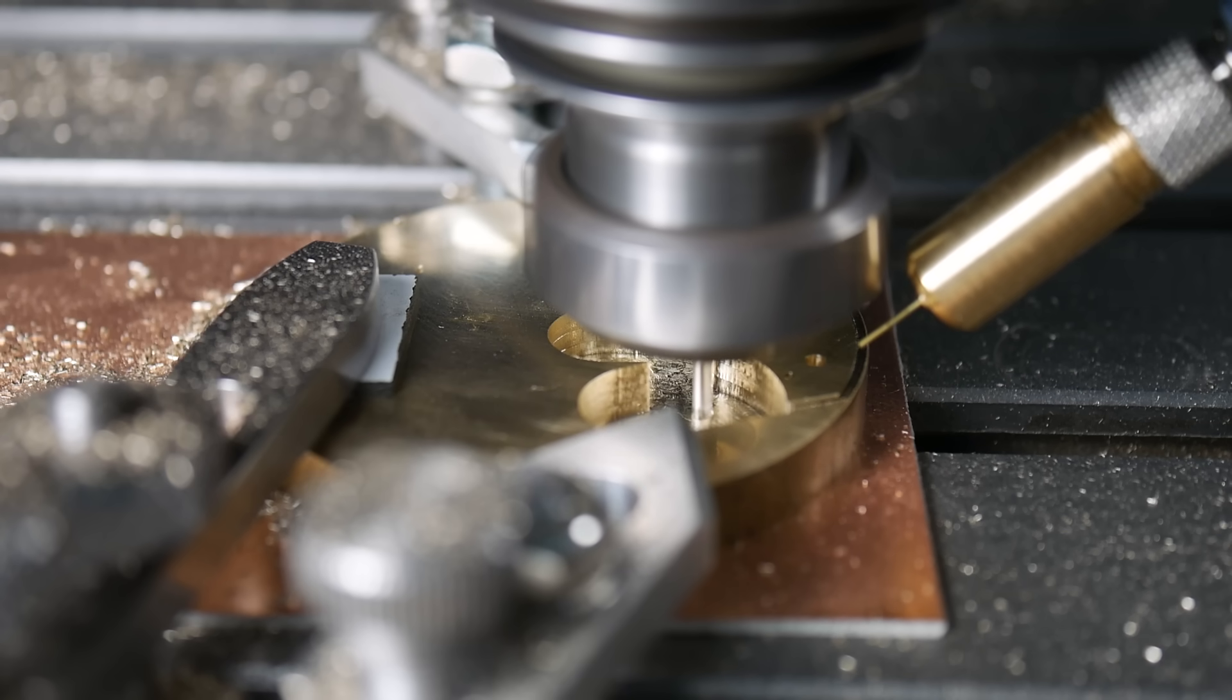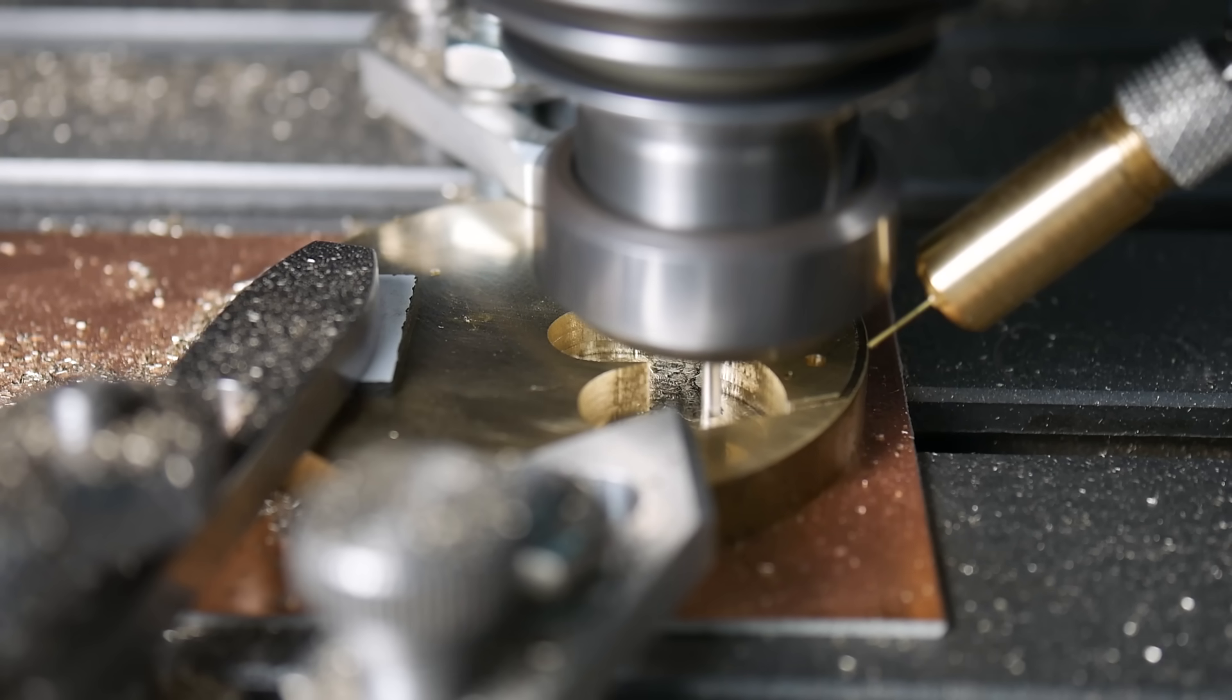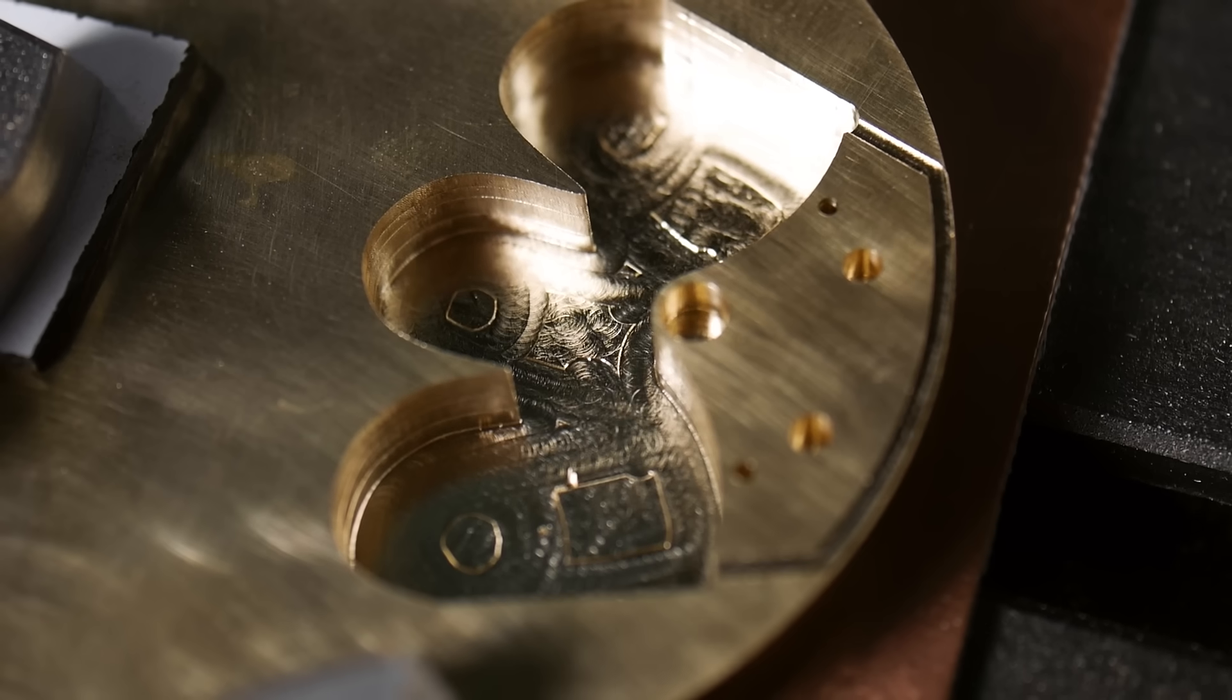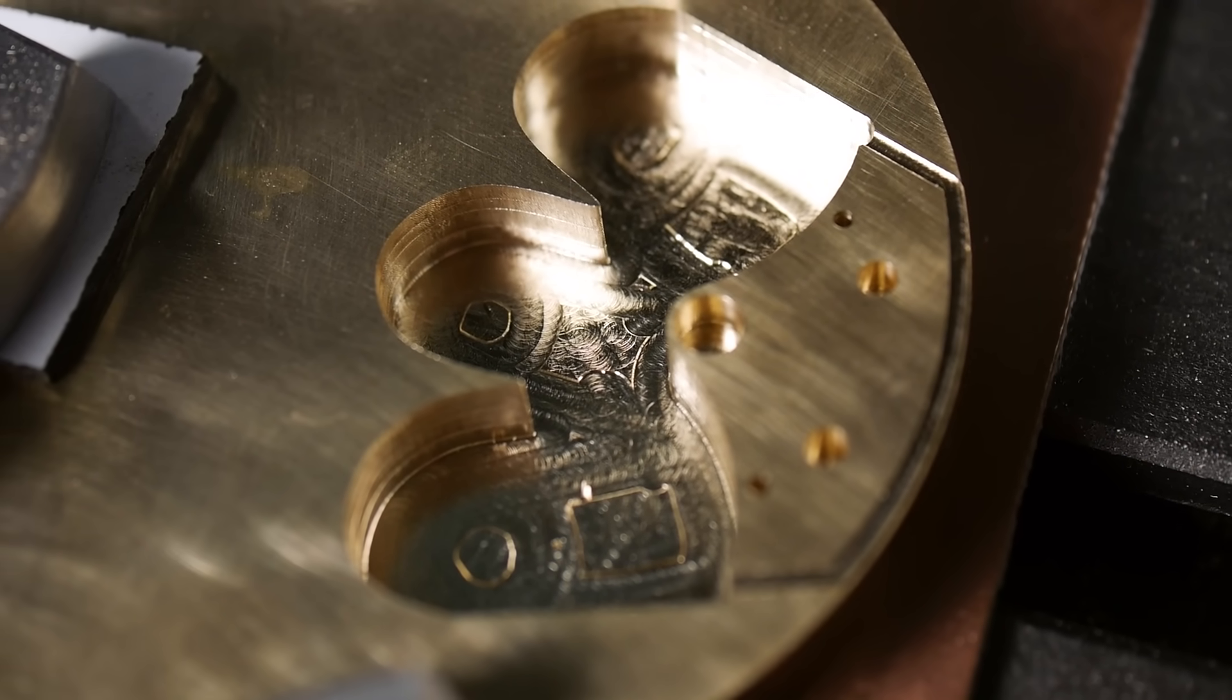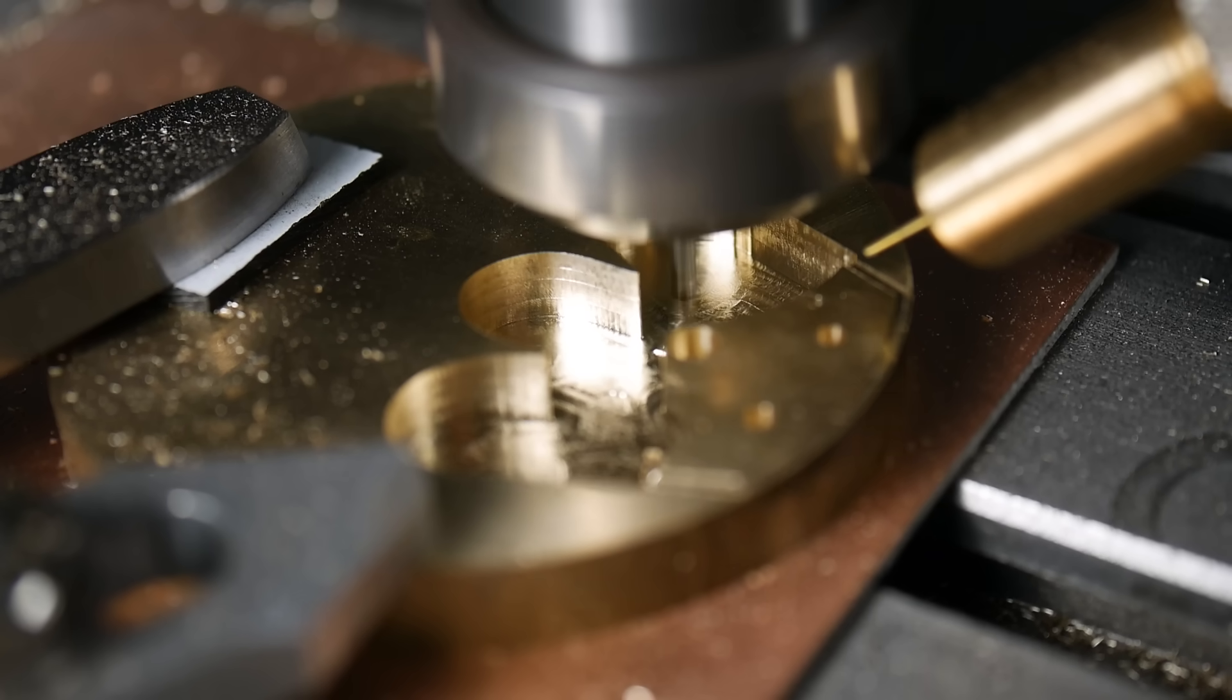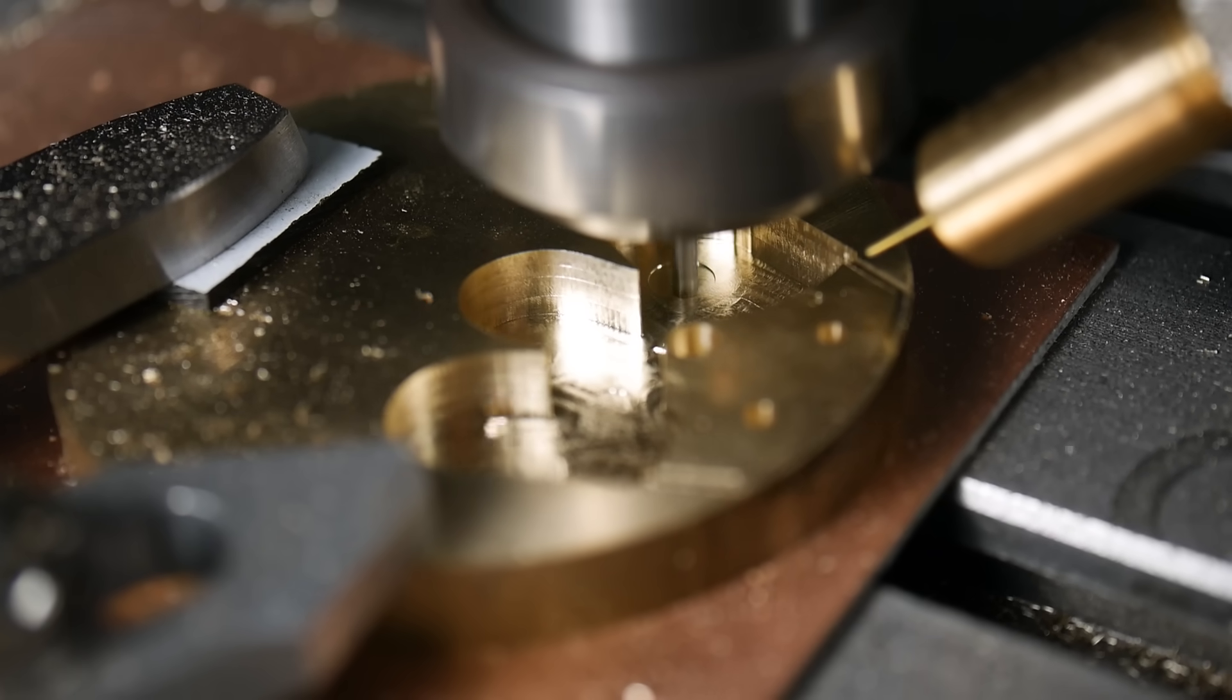I make my final pass to bring the recess to the correct depth, but I follow the contours of the shape instead of rastering to give a pleasing finishing pattern. This will be the final finish in the watch, although it won't be visible when the watch is assembled.